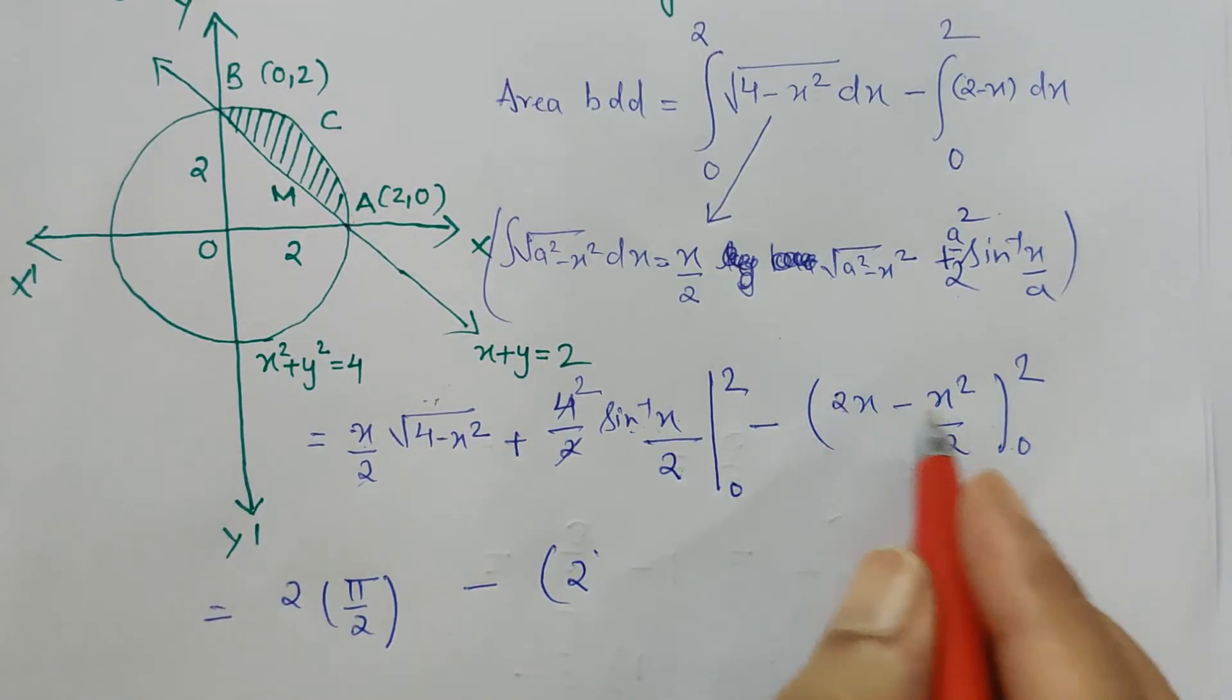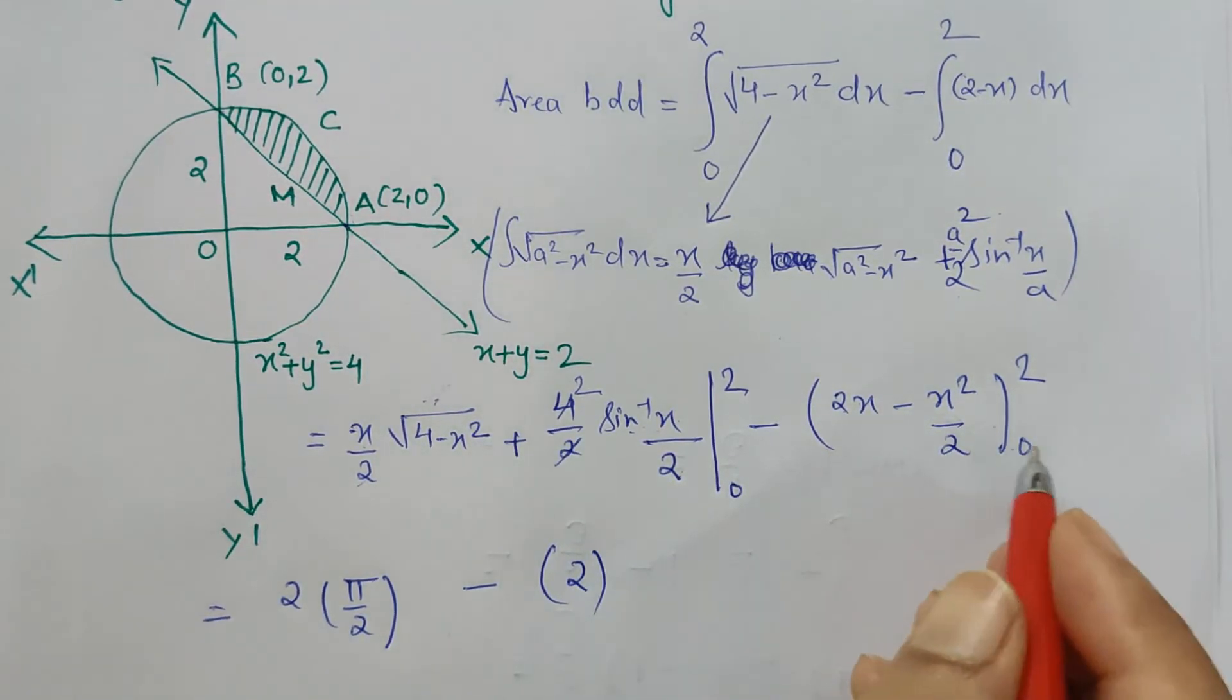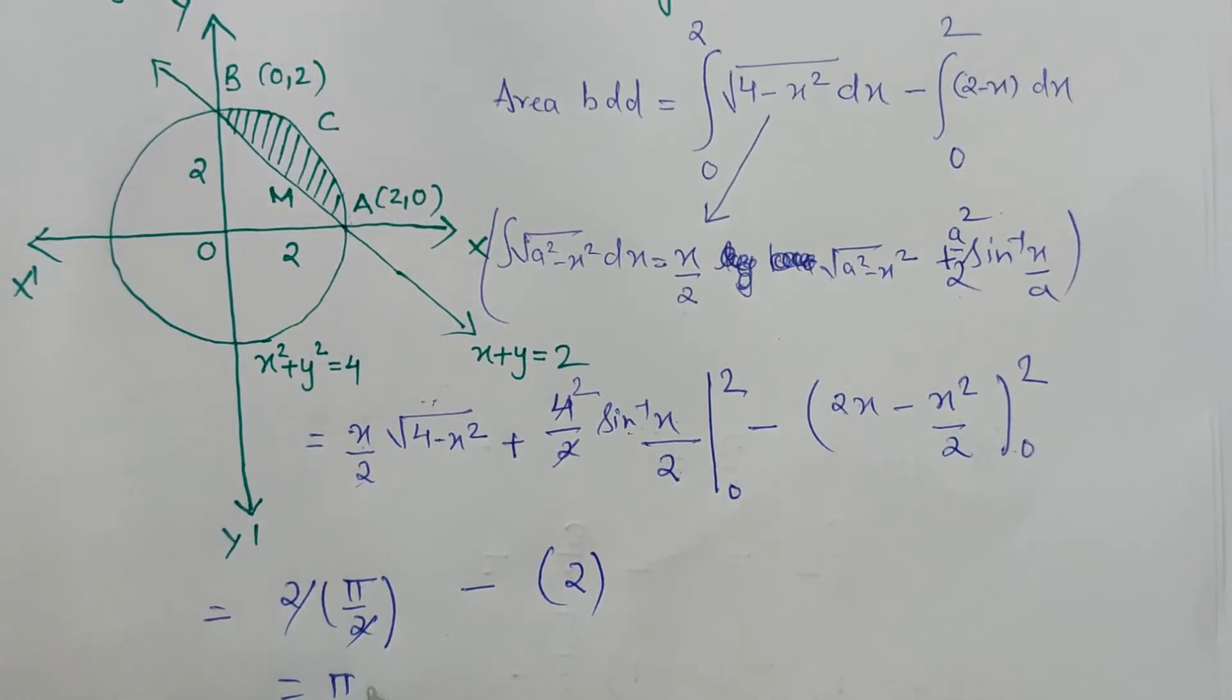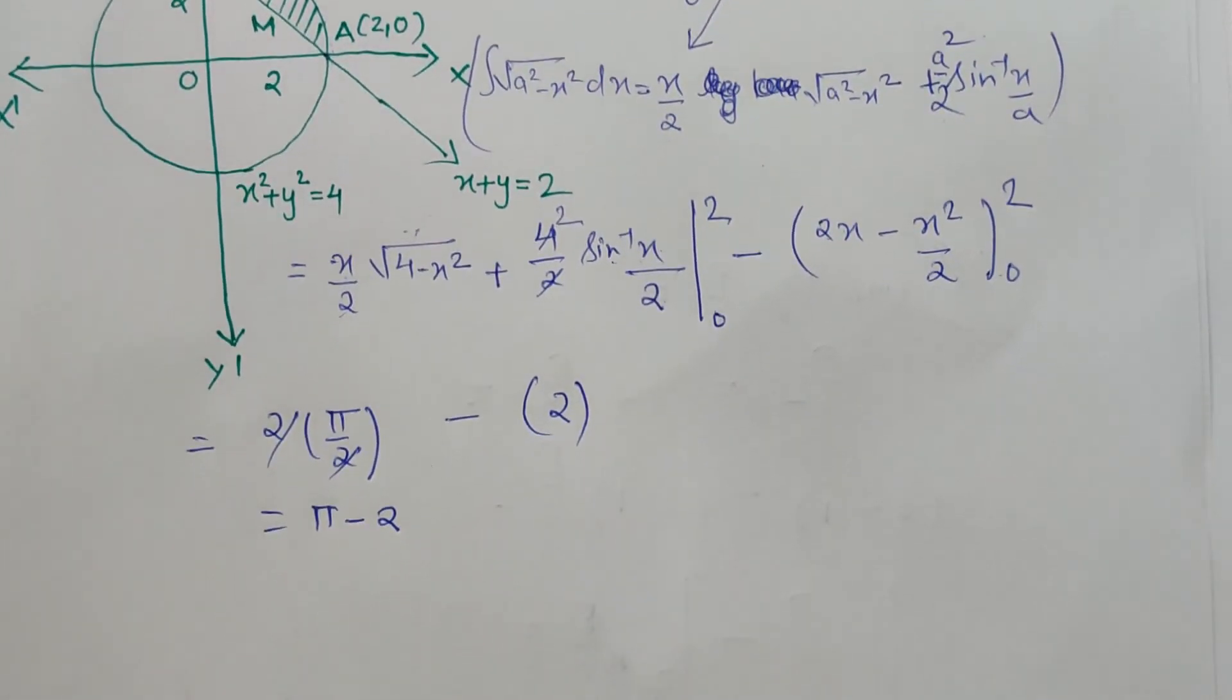When I put the lower limit, I get 0 only, so no need to show that. The 2 and 2 cancel, and we are left with π - 2 square units, which is the required area.